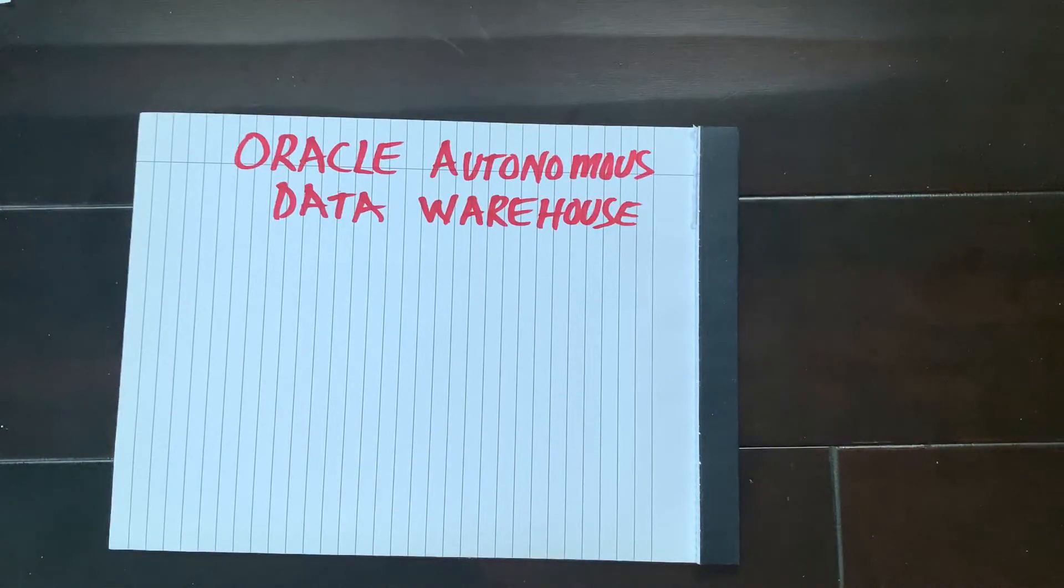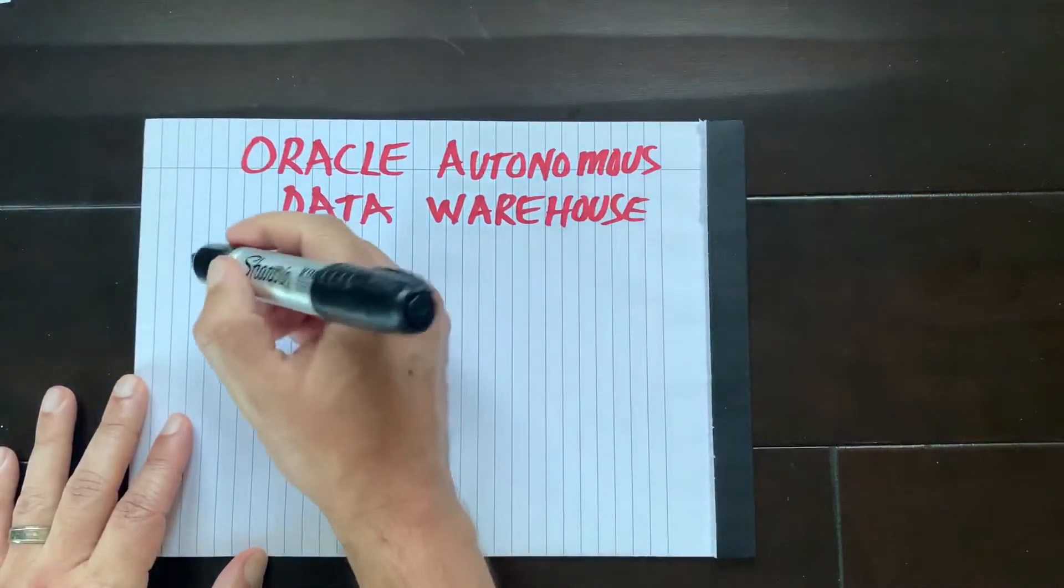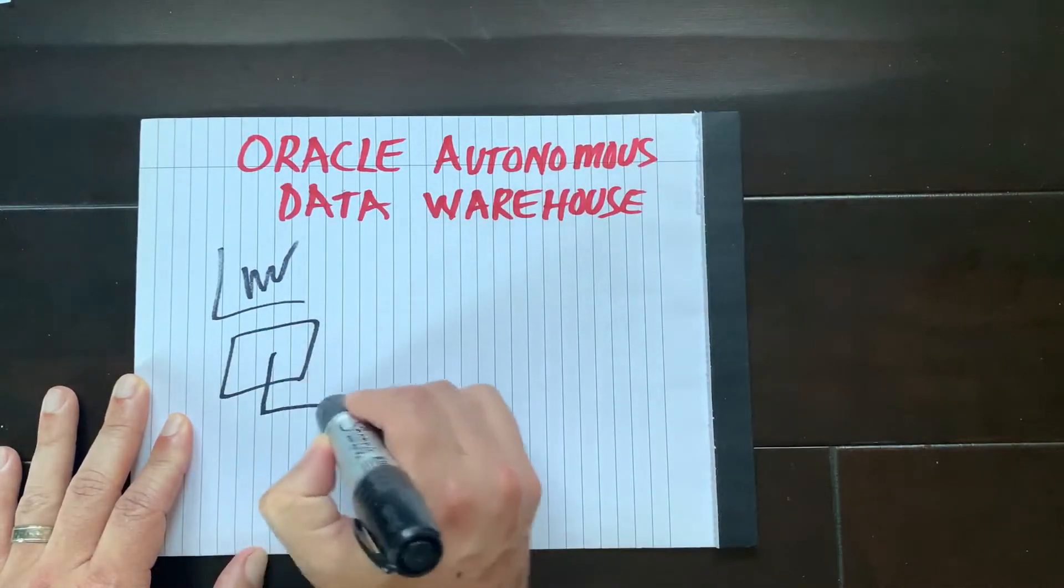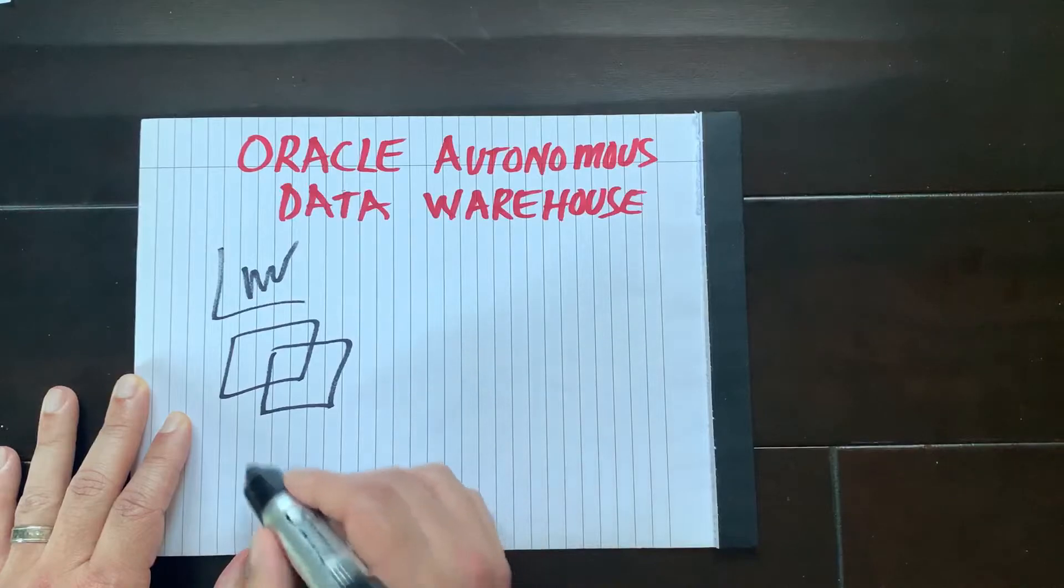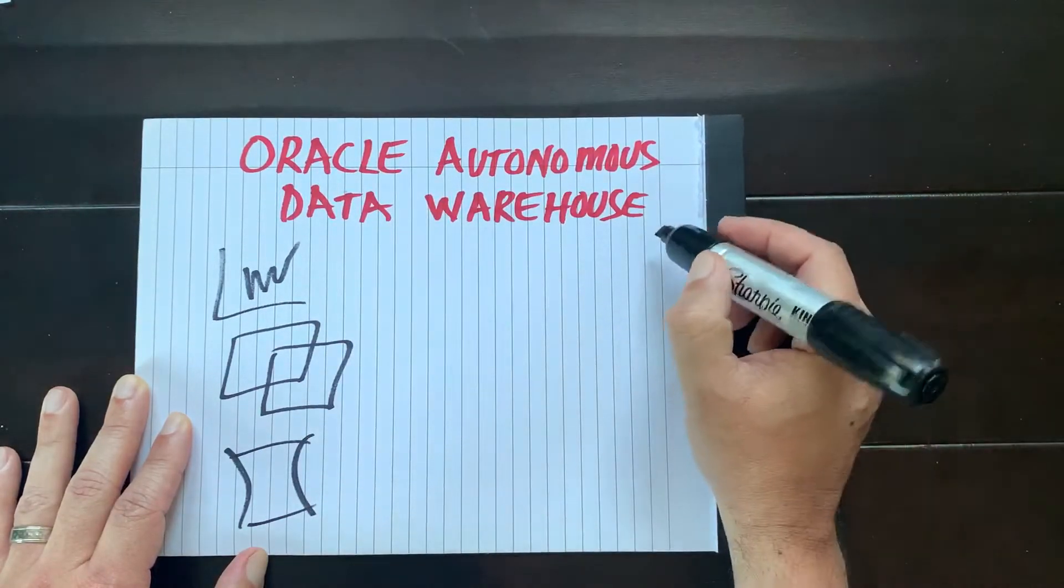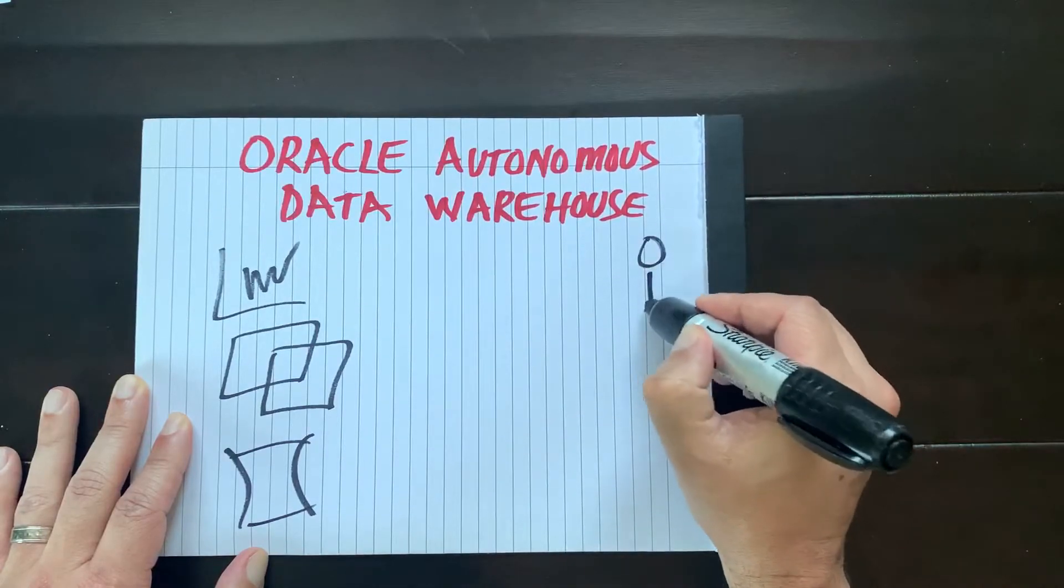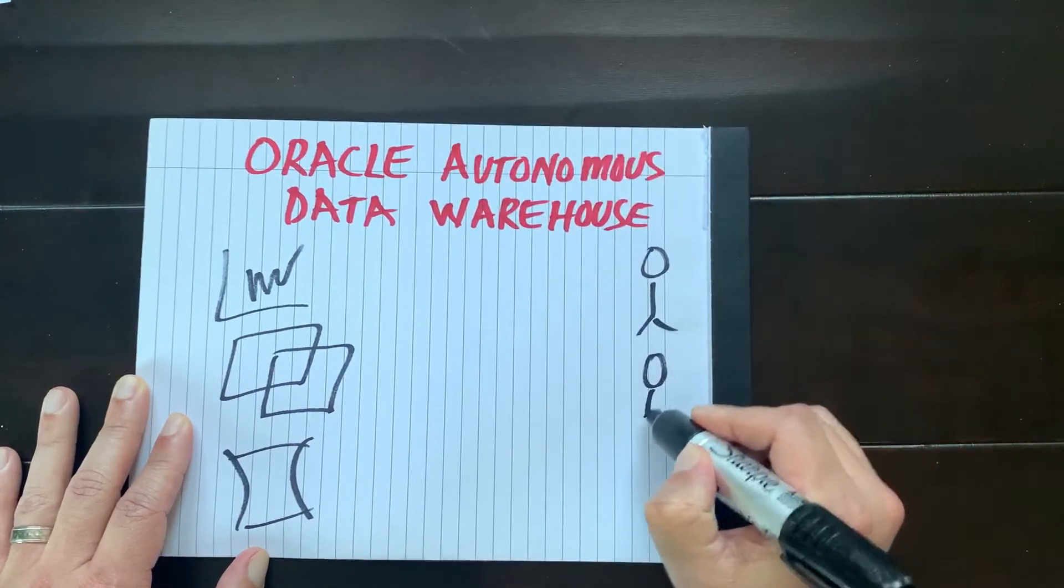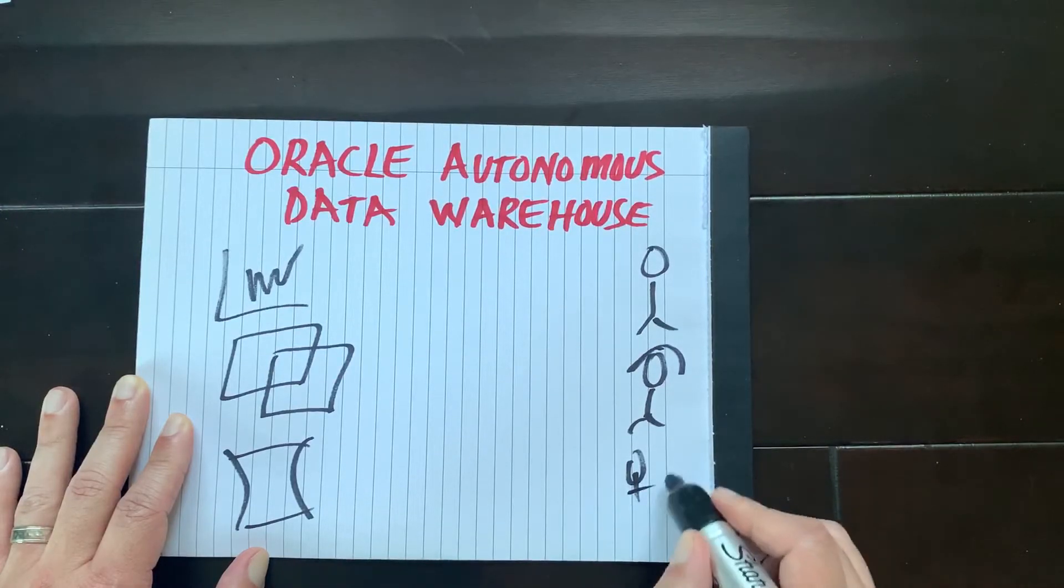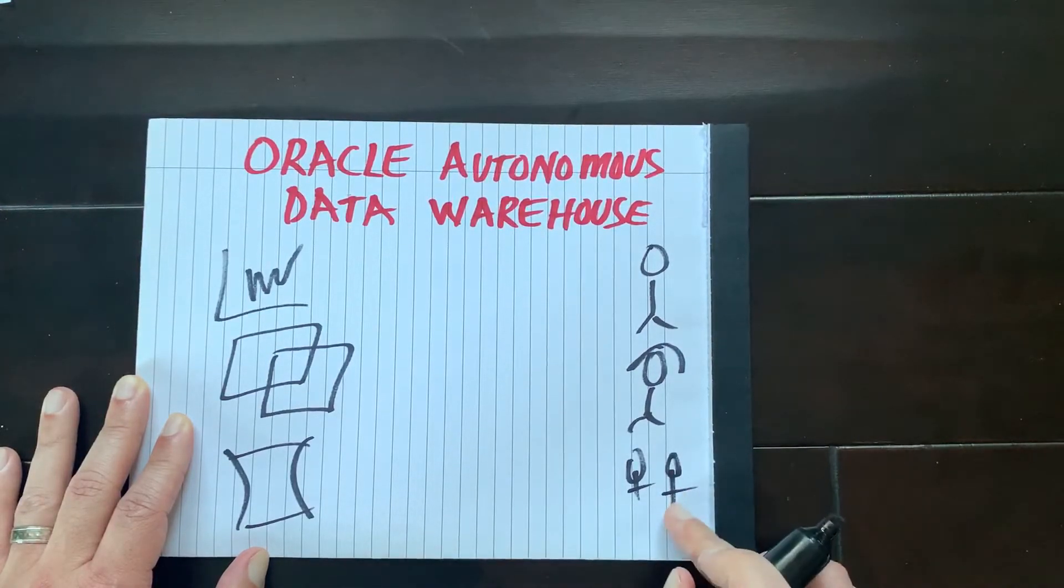Oracle Autonomous Data Warehouse. It takes the data that we need from the systems we need it from, whether they're Oracle systems or non-Oracle systems. It gets them to the people that need it, whether they're supervisors, whether they're colleagues, whether they're constituents.